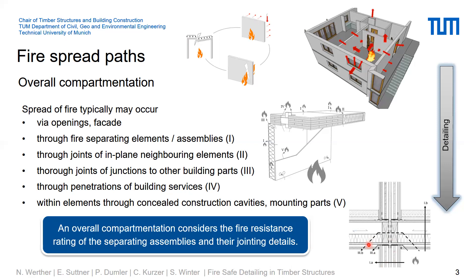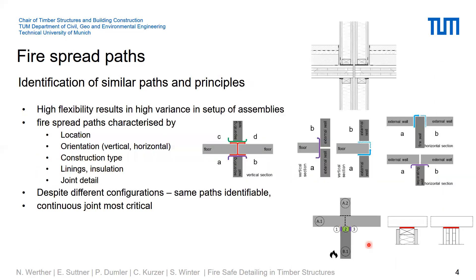An overall compartmentalization considers the fire resistance rating of the separating element and also the jointing details. As we started the project, we did a review of typical construction details and typical construction systems in timber structures to get an overview of what is needed and what must be covered by design principles. Based on this review, it became obvious that the location, the presence of lining and installation products, all influence fire spread.